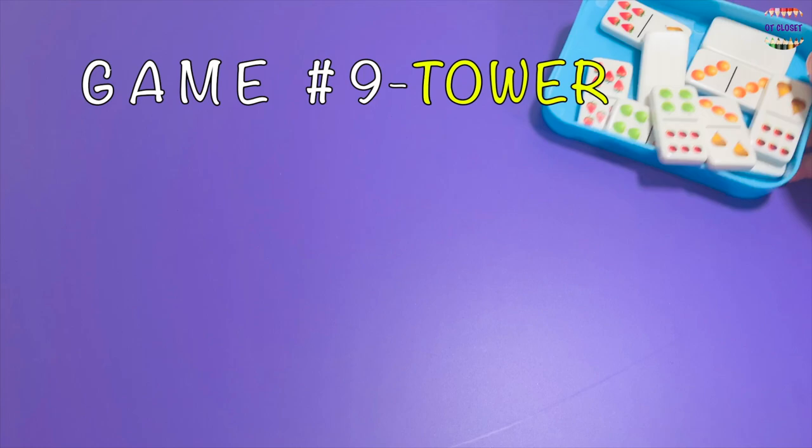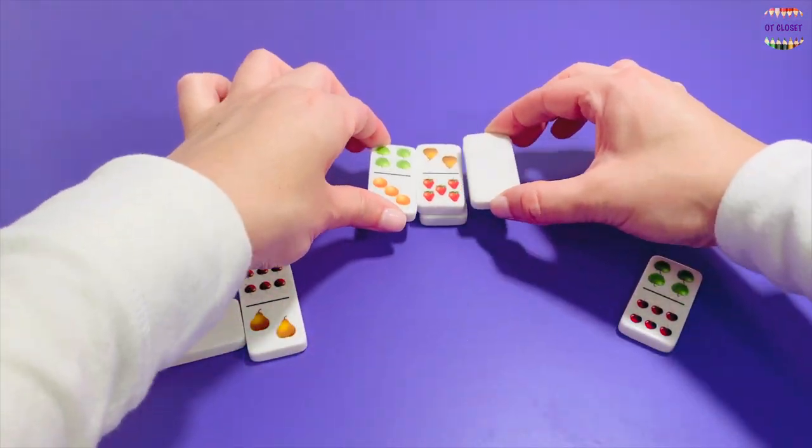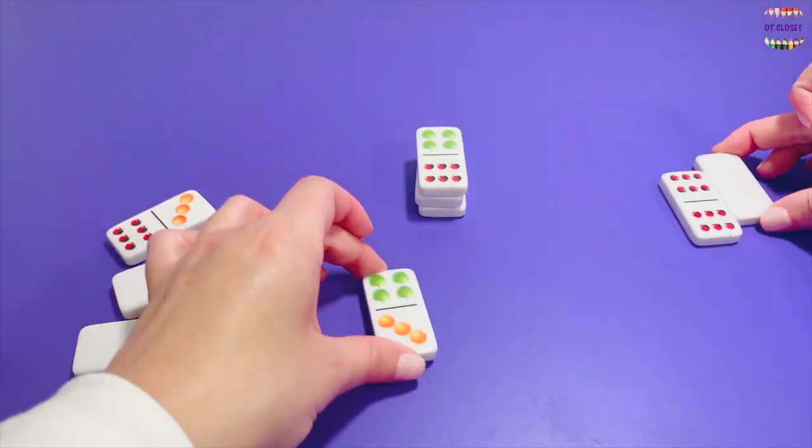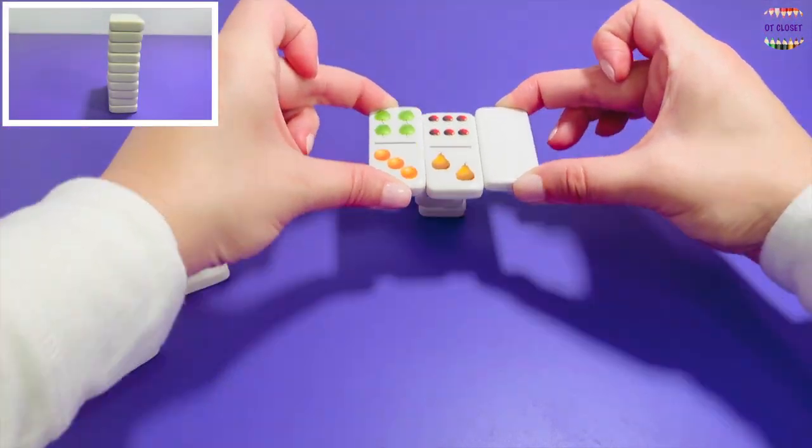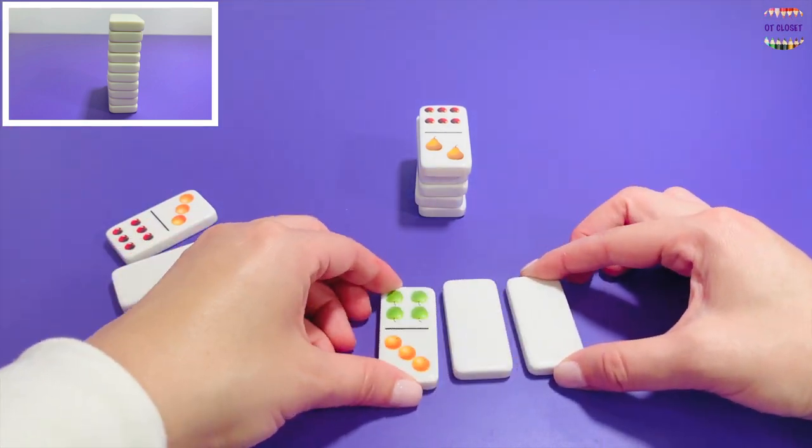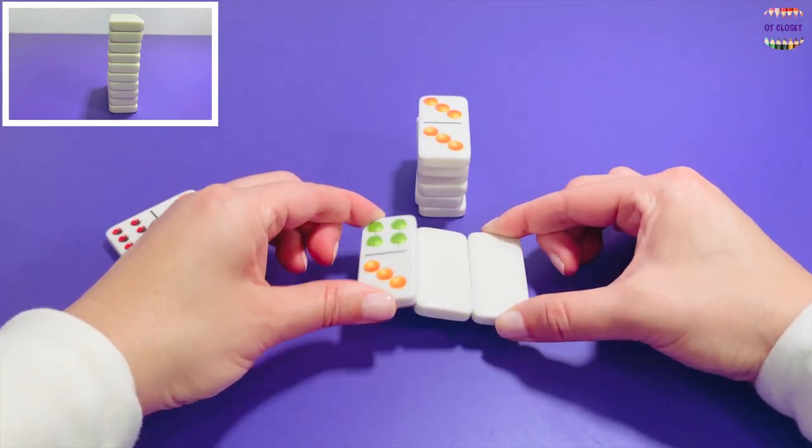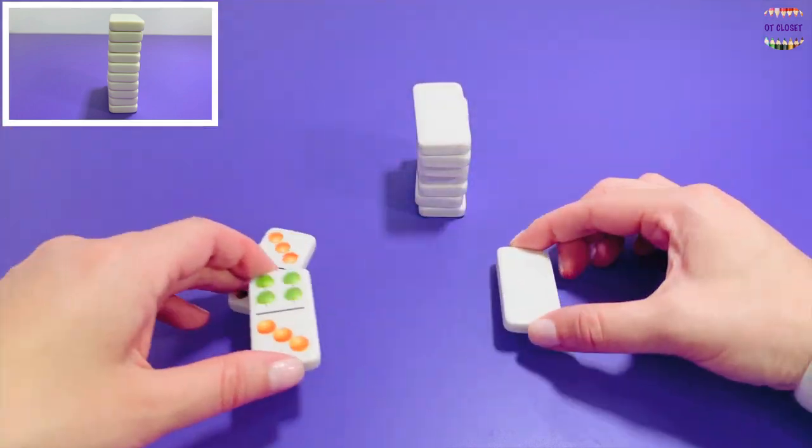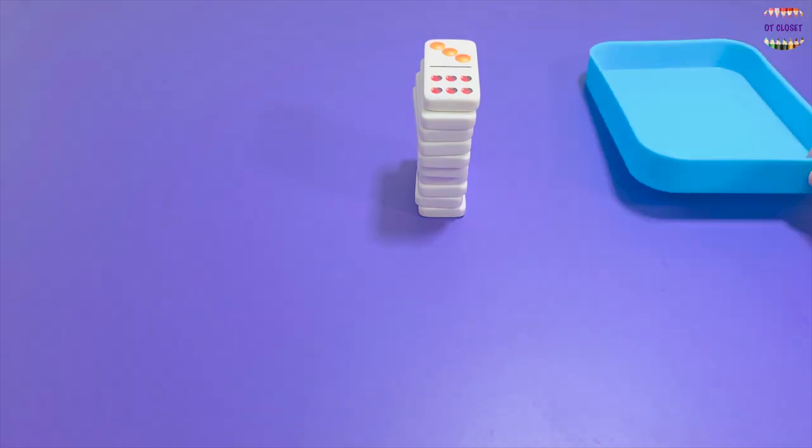Game number nine: get all ten dominoes to build a tower. Pick up one domino using the other two and try to stack them without dropping. If the dominoes are too slippery you can use your fingers. Bye-bye tower.